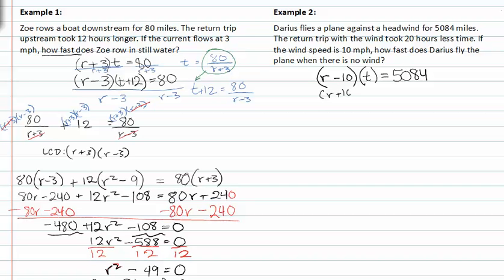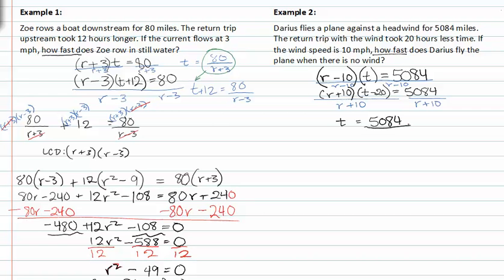When he returns, it's r plus ten times t, and it took twenty hours less, so minus twenty on the return trip, but the same distance. We divide by r minus ten on the first equation and r plus ten on the second, giving us t equals five thousand eighty four over r minus ten, and t minus twenty equals five thousand eighty four over r plus ten.